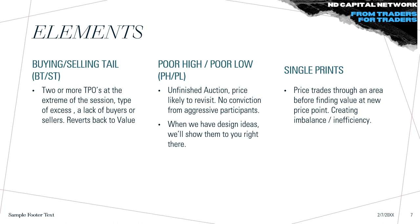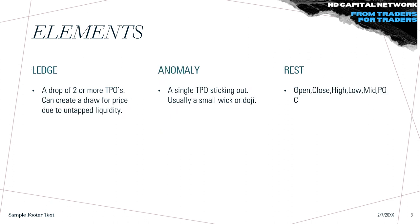We have buying and selling tails — two or more TPOs at the extreme of the session indicating excess, lack of buyers or sellers, and reversal back to value. We have poor highs and poor lows, which represent unfinished auctions. Single prints occur where price trades through an area before finding value at a new price point, creating imbalances — similar to fair value gaps (FVGs). We also have ledges — a drop of two or more TPOs — and anomalies, which are a single TPO sticking out like a small wick or doji.